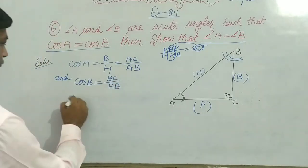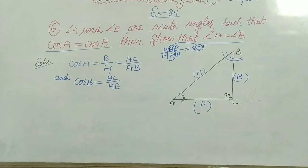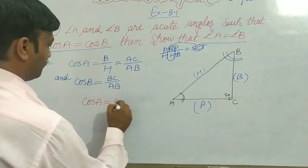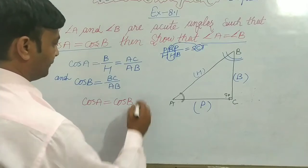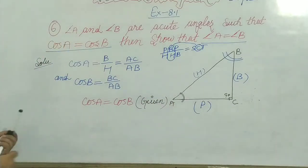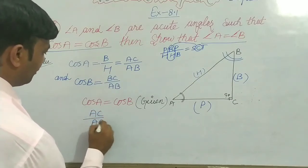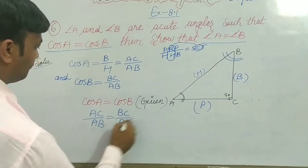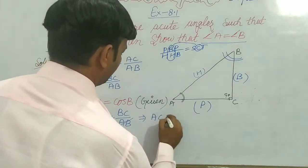We are given that cos A equals cos B. So we substitute their values: cos A equals AC over AB, and cos B equals BC over AB. Since AB over AB cancels out, we get AC equals BC.